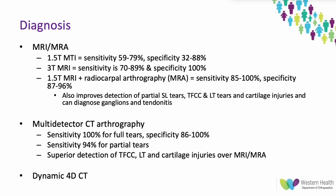Multi-detector CT arthrography is quite sensitive for full and partial tears. At Western Health, while we don't have multi-detector CT, we do have the capability for MR arthrography, which the radiographers confirmed can be arranged with a similar turnaround to a normal MRI. Dynamic 4D CT — real-time CT — is showing promising results and will likely be used more frequently in the future.